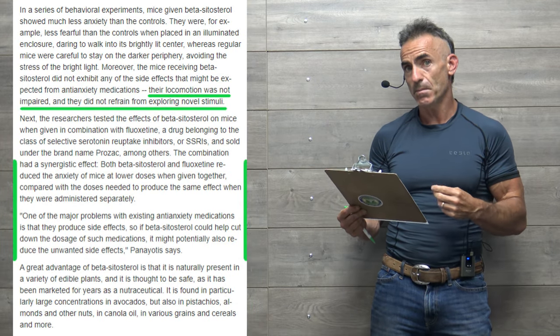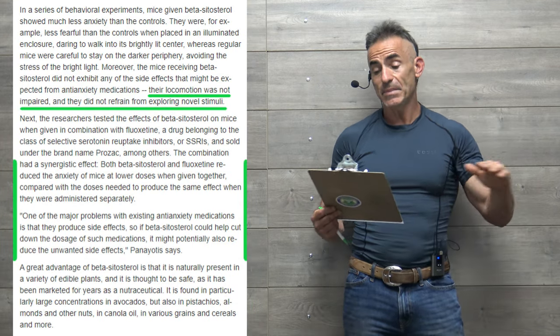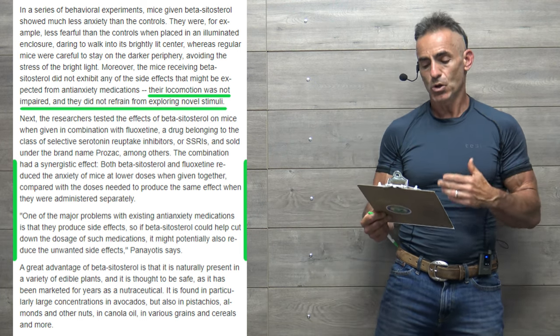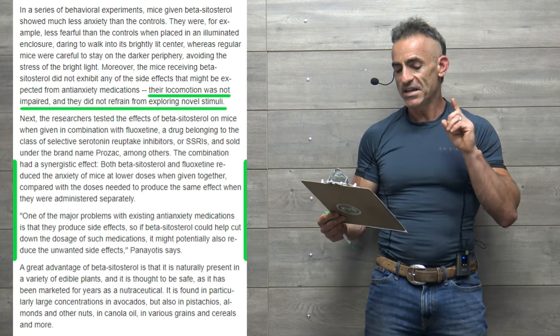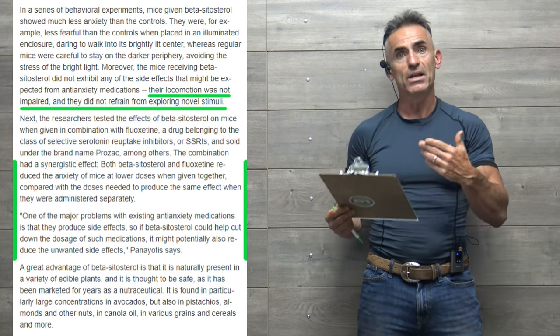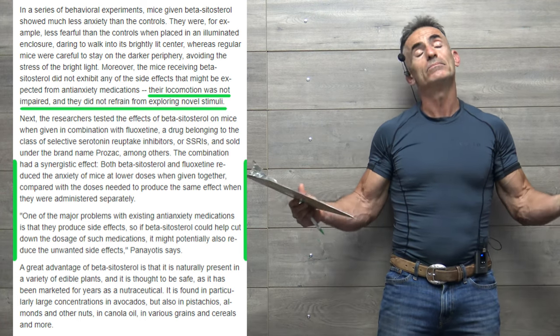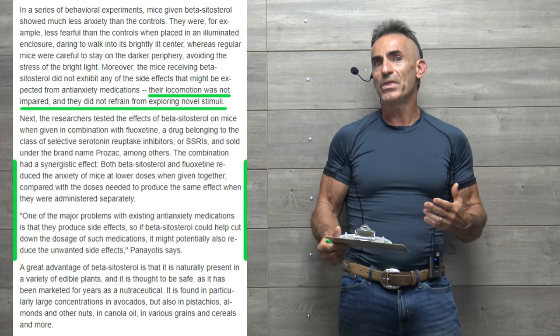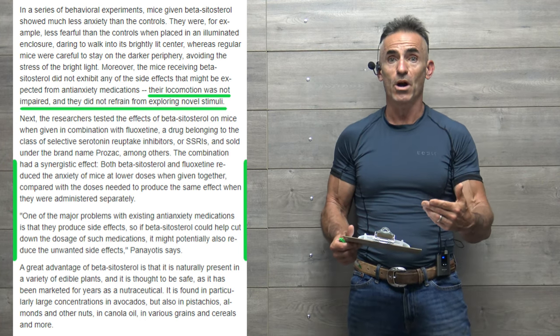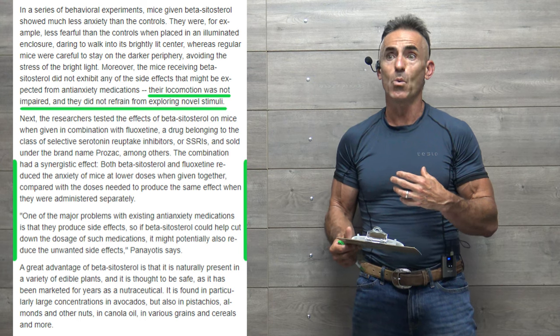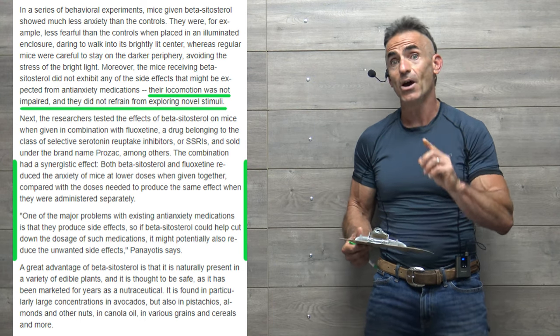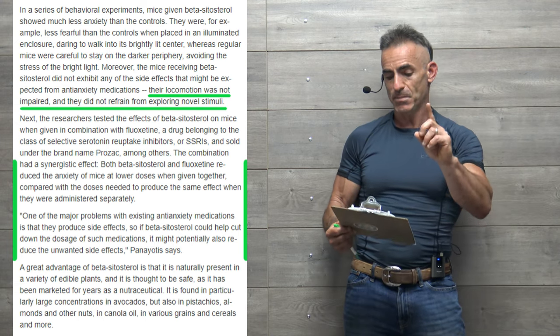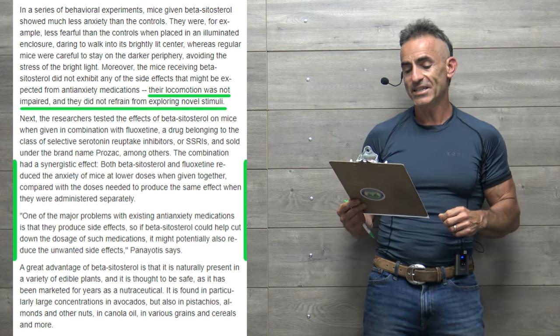Moreover, the mice receiving beta-sitosterol did not exhibit any of the side effects that might be expected from anti-anxiety medications. The locomotion was not impaired, and they did not refrain from exploring novel stimuli. So they were able to continue as mice do in their daily activities without feeling sedated, suppressed, or unaware, or having their awareness of the situational surroundings reduced down while maintaining curiosity about their surroundings.